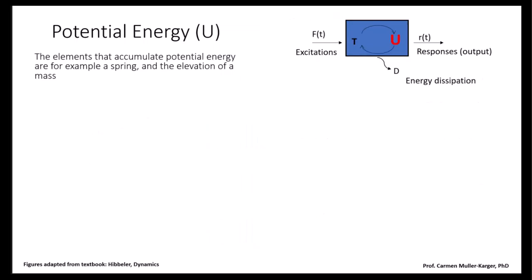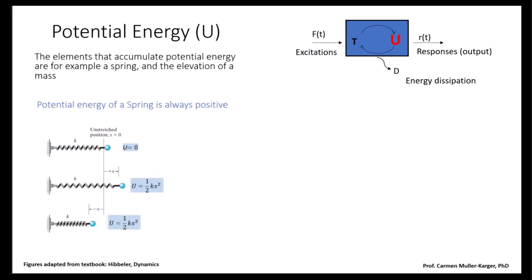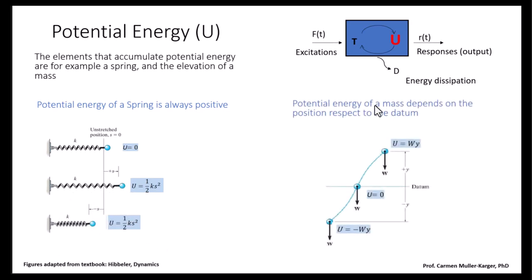In our system, we have elements that accumulate potential energy and elements that accumulate kinetic energy. The elements that accumulate potential energy are, for example, springs and the elevation of a mass. The potential energy of a spring is always positive and is defined as one-half the constant of the spring times the stretch squared. It doesn't matter if it's positive stretch or negative, which is compression of the spring. The potential energy of a mass depends on the position with respect to a datum. If we place a datum in a particular place, if we go up, we will have a positive potential energy. So the system gains the capacity to do work. And if it goes lower than that datum, it loses potential energy; therefore it's negative. It loses capacity to do work.